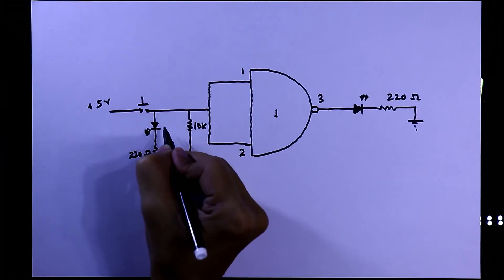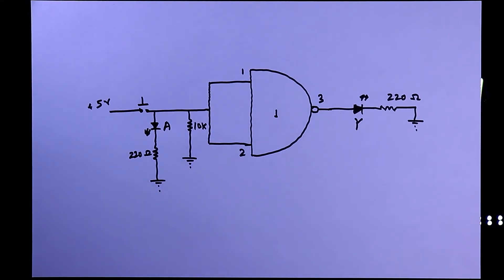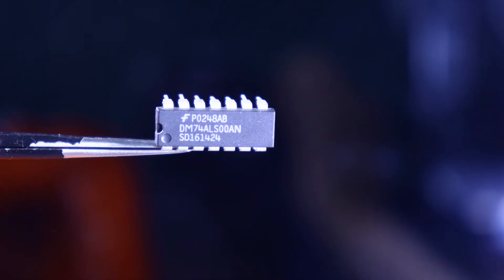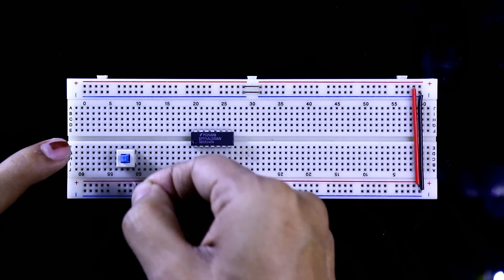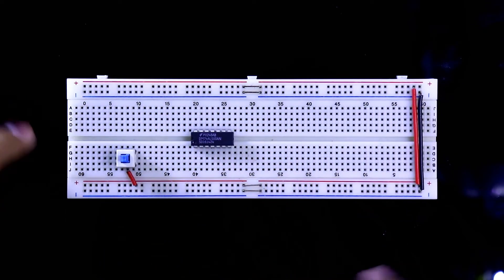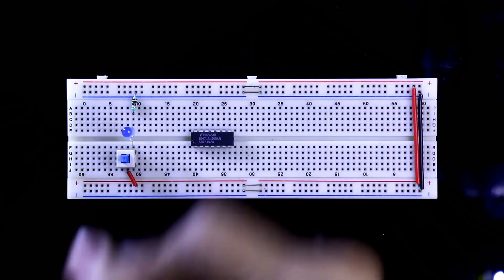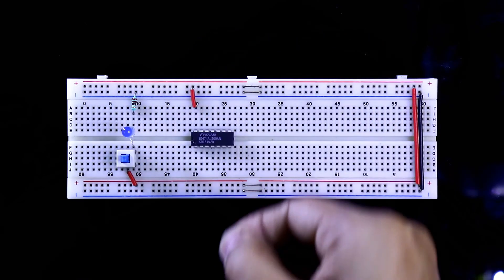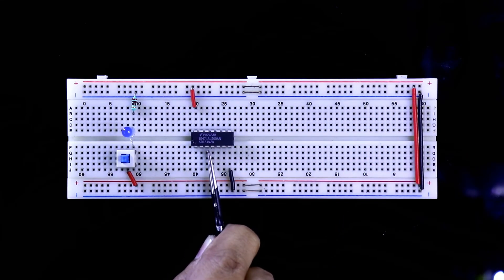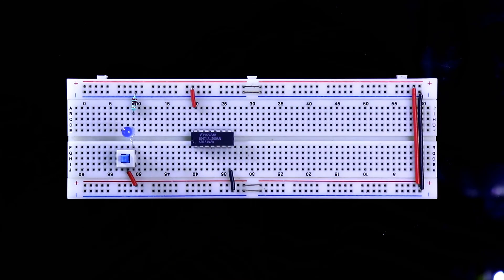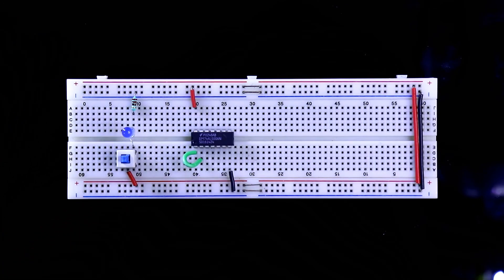So this is input A and this will be our output Y. Now we will see this on the breadboard. NAND gate IC 7400 is placed here. Here is the input switch — one pin of the switch is connected to plus 5 volts. On the other side, an LED with a resistor is connected to ground. Pin 14 is connected to plus 5 volts and pin 7 is connected to ground. Here is pin 1, pin 2, and pin 3. Now we have to short both pin 1 and 2, and here I have connected them together.